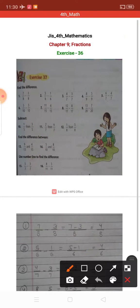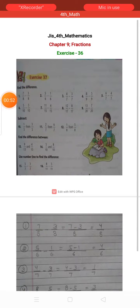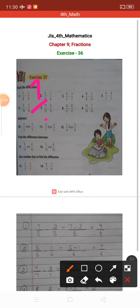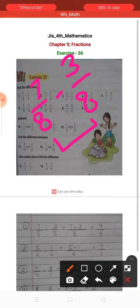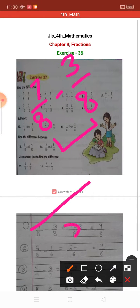Okay, I will take an example. The first question given is 7 upon 8 minus 3 upon 8. So, here, denominator is the same. Same is the same, so we will take common. Denominator is 8. Then, what will we do?